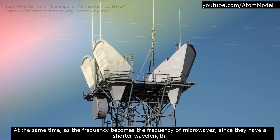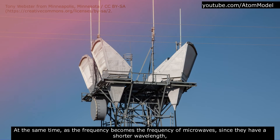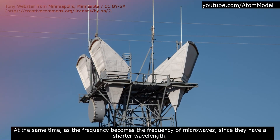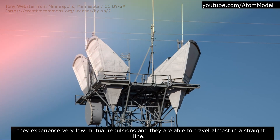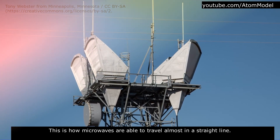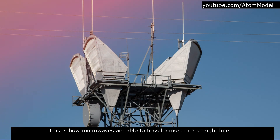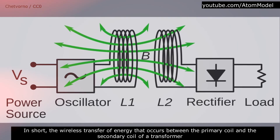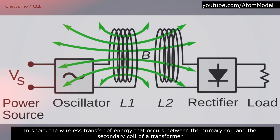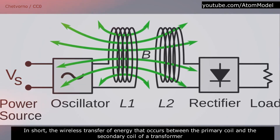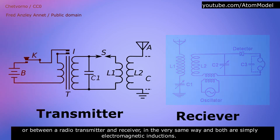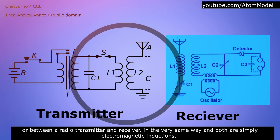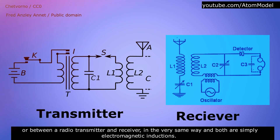At the same time, as the frequency increases to that of microwaves, since they have a shorter wavelength, they experience very low mutual repulsion and are able to travel almost in a straight line. In short, the wireless transfer of energy between the primary coil and secondary coil of a transformer and between a radio transmitter and receiver occurs in the very same way — both are simply electromagnetic induction.